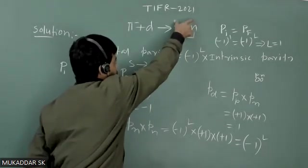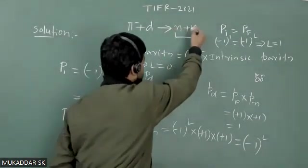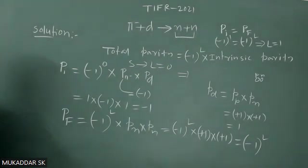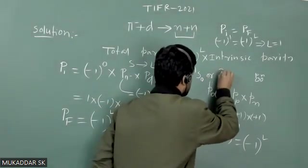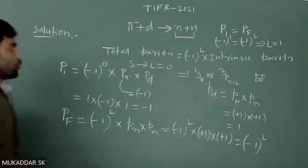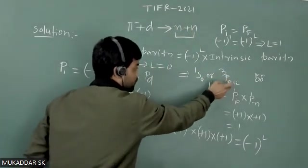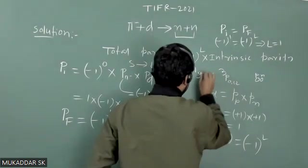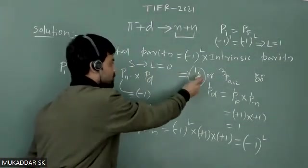Now we can see from the products that both are nucleons — they are identical nucleons. For two identical nucleons, the allowed states are either one S zero or three P zero, one, or two. So you must keep in mind that for two identical nucleons, the only possible states are either one S zero or three P zero, one, two. From our calculation, L equals one, so the one S zero state is not allowed.